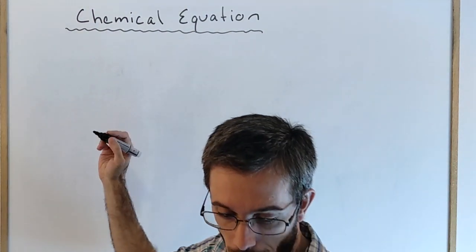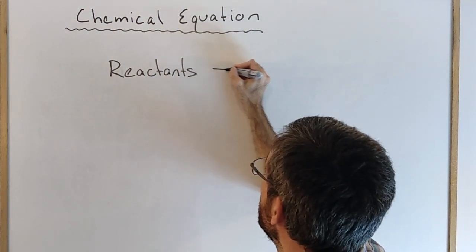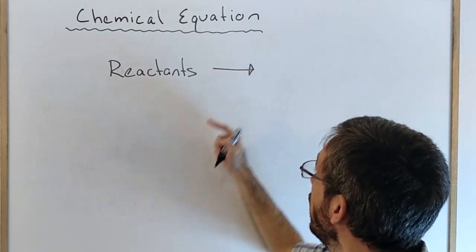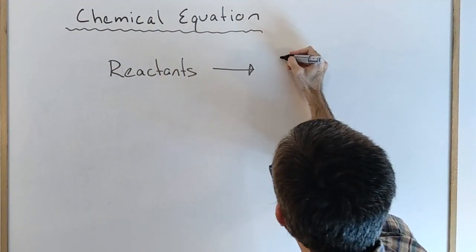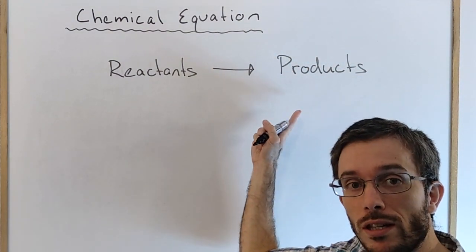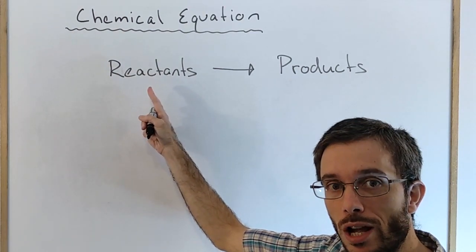On the left, you have the reactants. Then you have an arrow that says in which direction the reaction is going. And then you have the products on the end. The products is what you have at the end of the reaction, and the reactants is what you have at the beginning of the reaction.